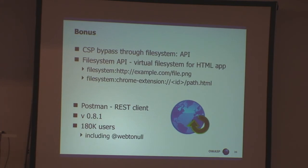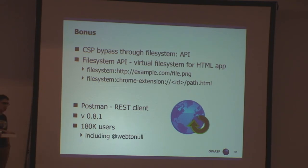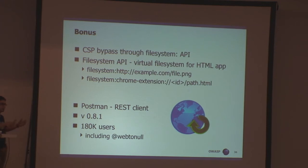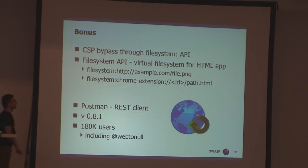This is still possible in Google Chrome extension version 2 because CSP doesn't really care about binary vulnerabilities in some plugins. And there's a bonus slide. I found two days ago that some extensions actually use the new file system API. The new file system API is basically a virtual file system in your browser, protected by same-origin policy — you cannot access file systems of other applications from other origins.